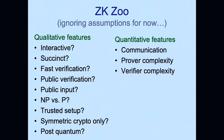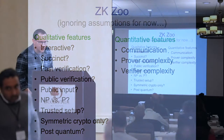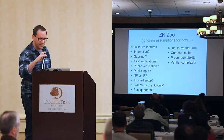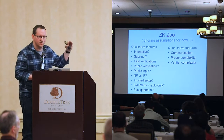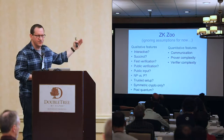Even after fully specifying all desired qualitative features, there are still trade-offs between different efficiency measures: communication (how many bits the prover must send — the main feature in the non-interactive setting), prover computation complexity, and verifier computation complexity. In many cases we care a lot about some features and care less about others.